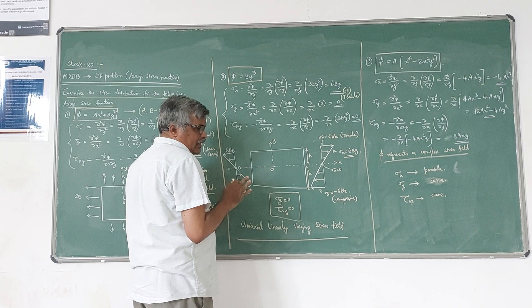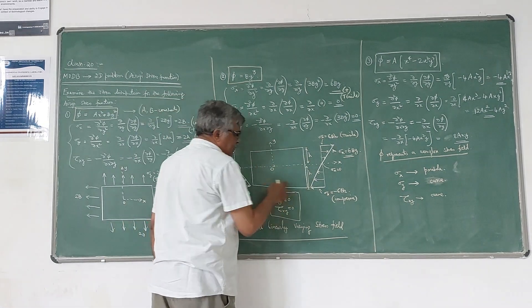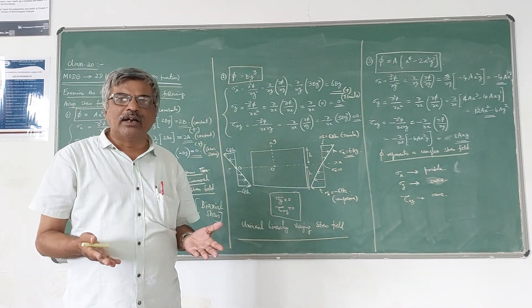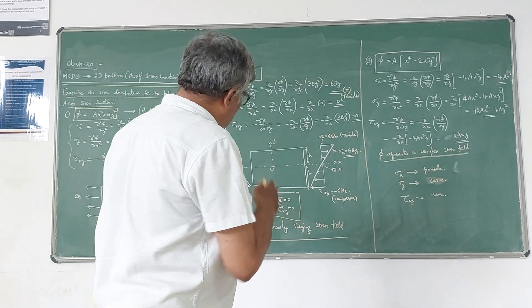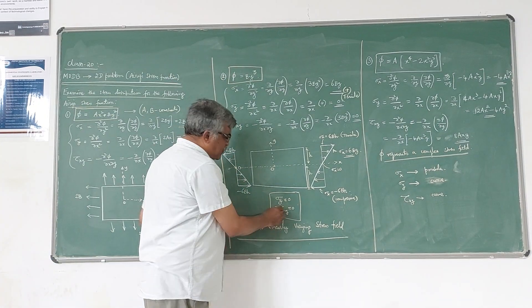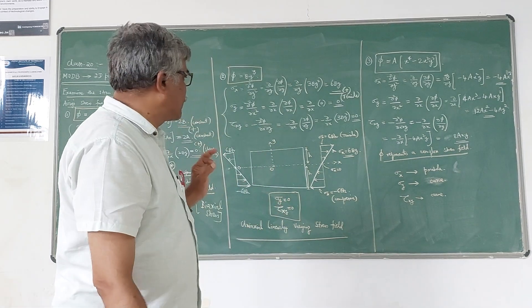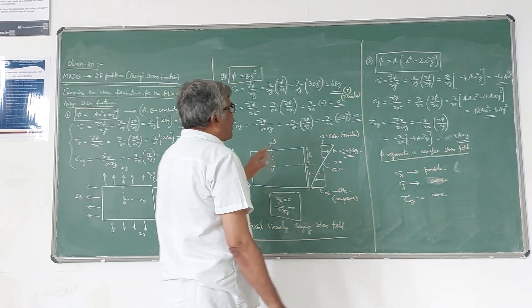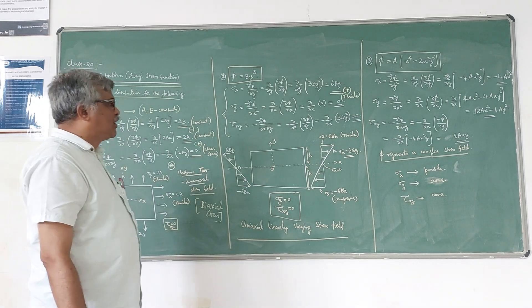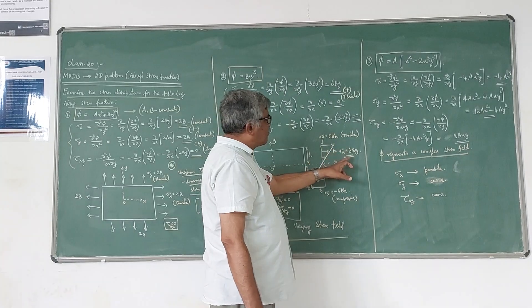In this case, only σx exists. There is no σy and no τxy — both are zero. If we try to plot this, σx = 6by. If y is positive, σx becomes tensile, and if y is negative, σx becomes compressive.